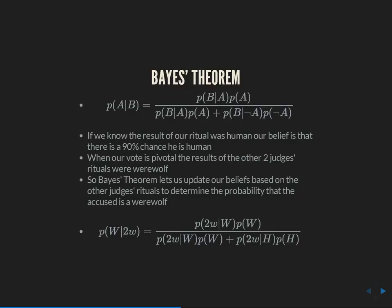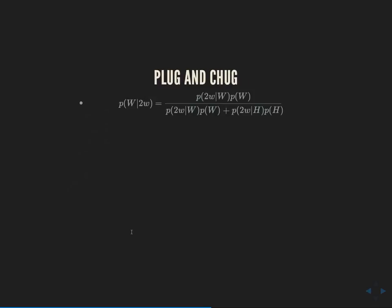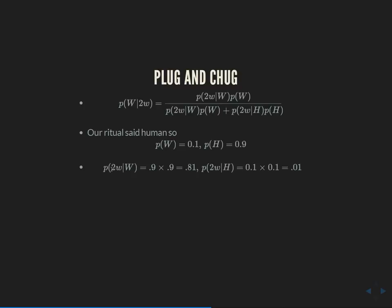So we want the probability the accused is a werewolf given the other two judges voted werewolf. Capital W means the person actually is a werewolf; little w is the odds that the other two judges voted werewolf. We plug in: our ritual said human, so our current belief is P(werewolf) = 0.1 and P(human) = 0.9. The probability two judges vote werewolf given he actually is a werewolf is 0.9 × 0.9. The probability they both vote to execute given he's human is 0.1 × 0.1. Wolfram Alpha tells us the result is 0.9.